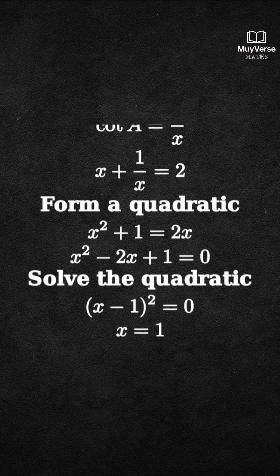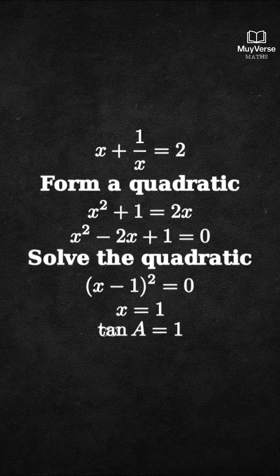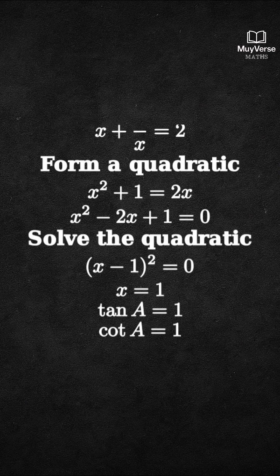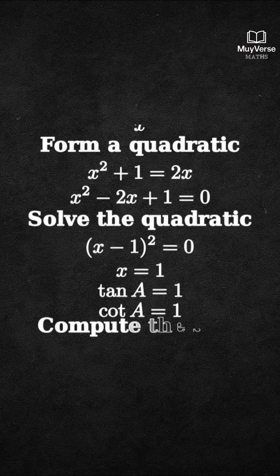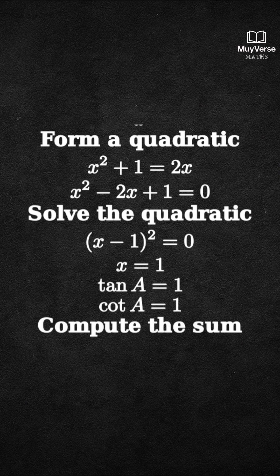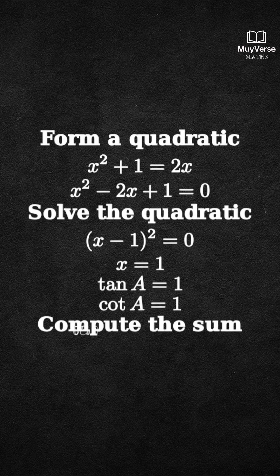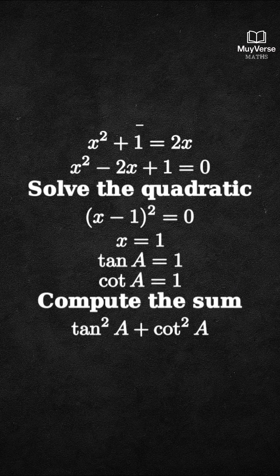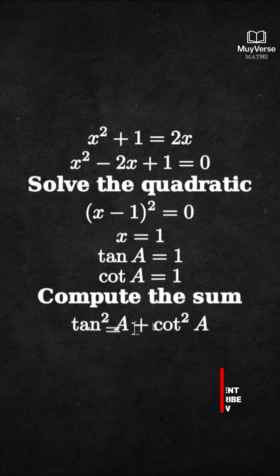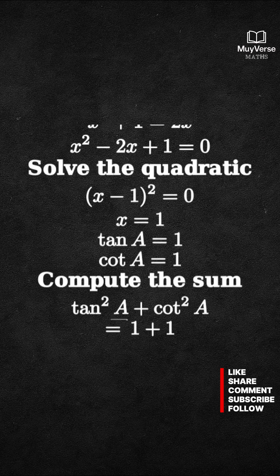Therefore, tan(A) = 1 and cot(A) = 1. Final step — compute the requested sum: tan²(A) + cot²(A) = 1 + 1 = 2.